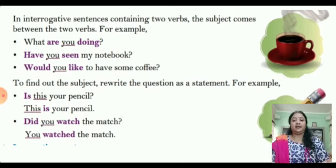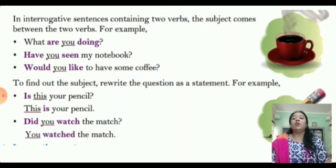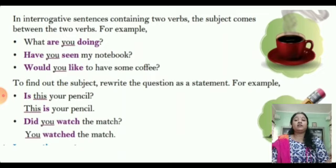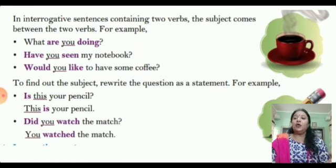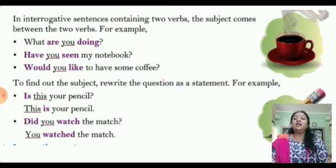When we have two verbs in a sentence, the subject comes in between the two verbs. For example, 'What are you doing?' — 'you' is the subject coming between 'are' and 'doing.' 'Have you seen my notebook?' — 'have' and 'seen' are the two verbs and 'you' is the subject in between them. 'Would you like to have some coffee?' — 'would' and 'like' are the two verbs and 'you' is the subject between them. Sometimes, to find the subject, we can rewrite the sentence as a statement by transforming the interrogative into an assertive.